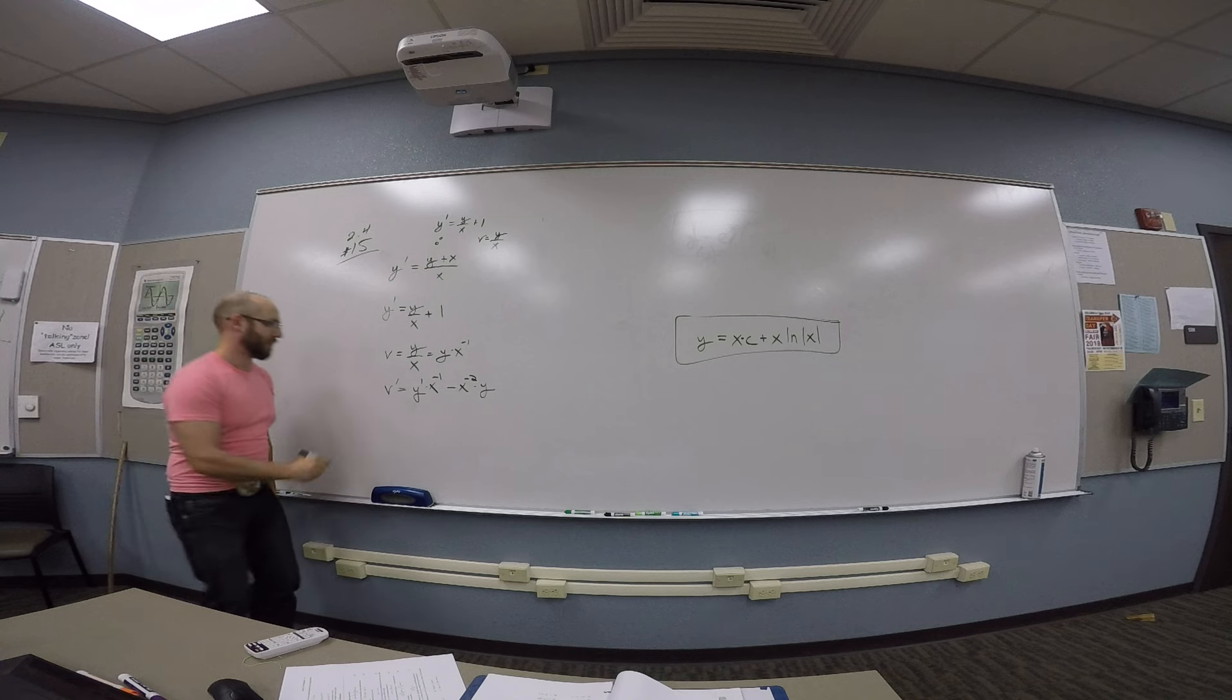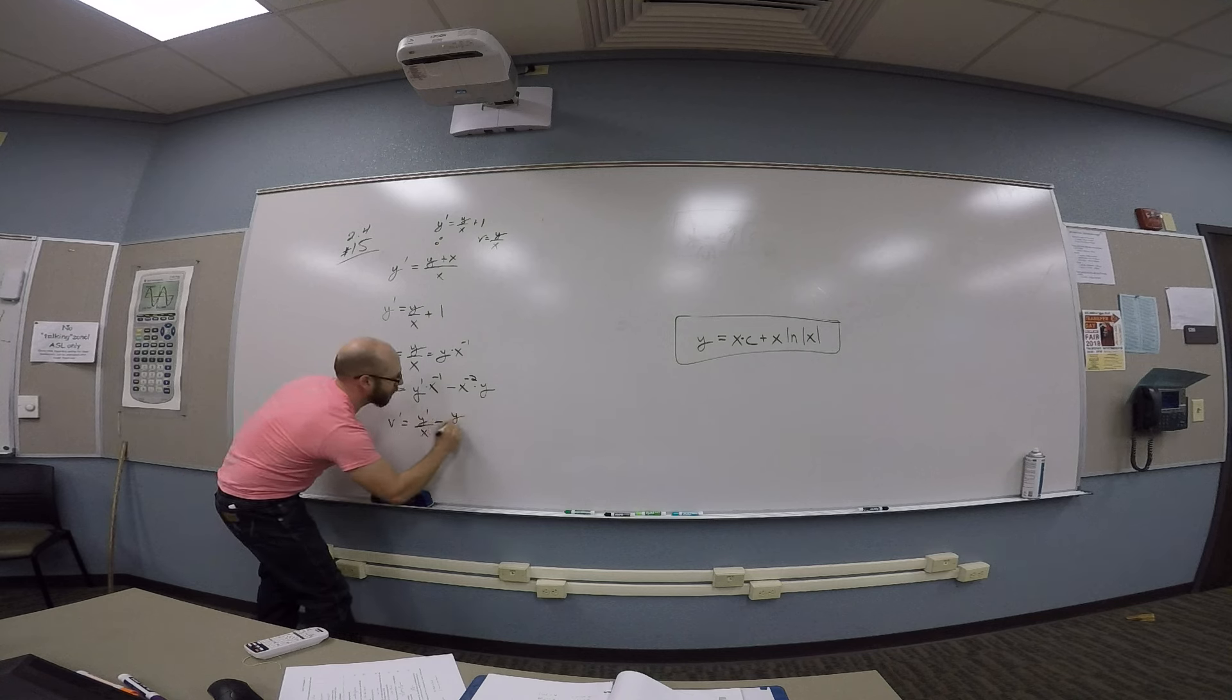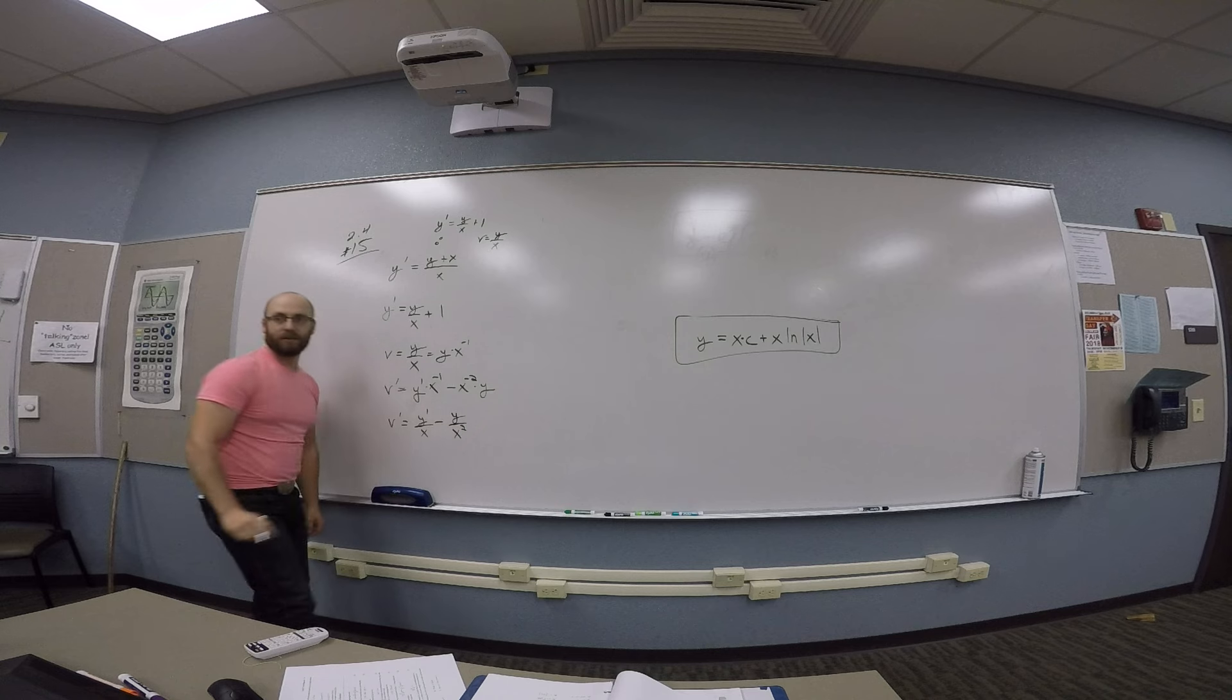So v prime is y prime over x minus y over x squared.